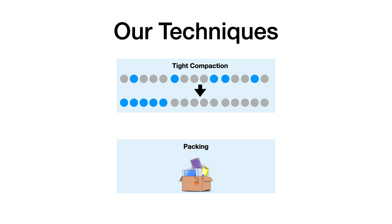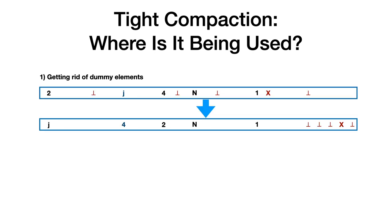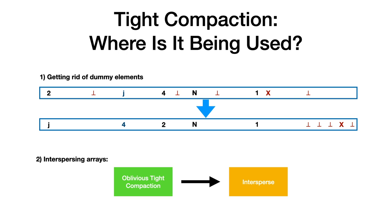In the remainder of the talk, I'm going to show some of our techniques. I'm going to describe a little bit about tight compaction and also a technique called packing. So where is tight compaction being used? There are many different places where tight compaction is being used in our construction. The first example is when we want to rebuild the level — we sometimes have to get rid of the dummy elements that were introduced. We cannot use oblivious sort here because we want to do the rebuild in linear time. We also observed that oblivious tight compaction can be used for interspersing a few arrays together.